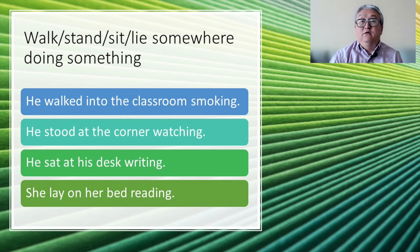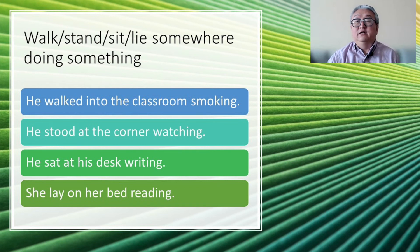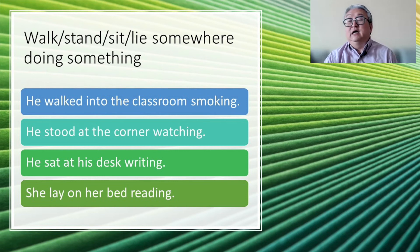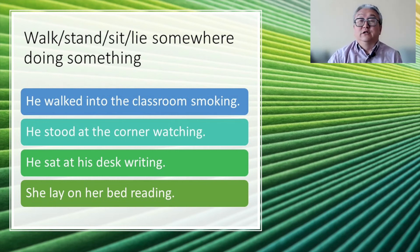There are four verbs — walk, stand, sit, lie — where the formula requires you to tell the location of the action and then add -ing. He walked into the classroom smoking, he stood at the corner watching, he sat at his desk writing, she lay on her bed reading. These four verbs are used in that pattern.